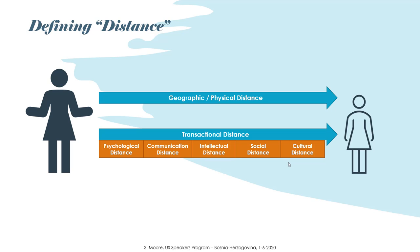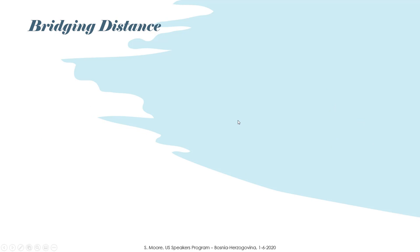These sorts of distances exist in every educational relationship, including in the classroom. Even in your physical classroom, you may feel these psychological, communication, social, or cultural distances between you and your students — or the students may experience that type of distance between themselves as well. So we're always trying to bridge a distance with our learners. Even when we're sitting in the same room, we can feel very distant from each other. The way in which we use technology is to bridge the geographic distance — but the technology itself doesn't bridge any of the other types of distance.